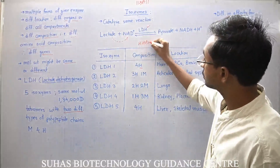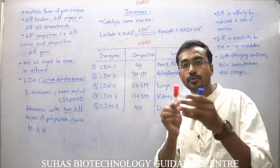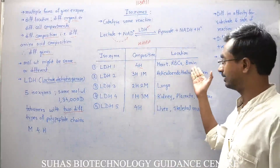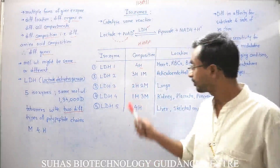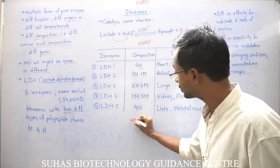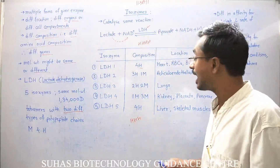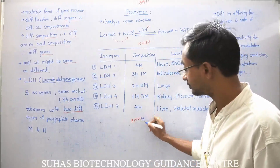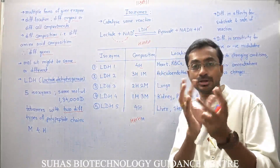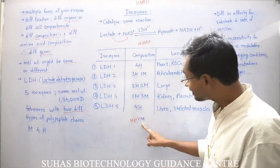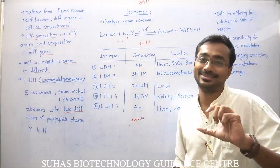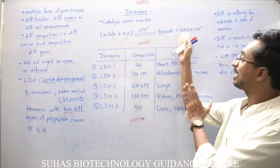LDH1 with combination H-H-H-H is present in heart, erythrocytes, and brain. LDH2 has composition 3H and 1M — three H-type polypeptides and one M-type — and these 4 polypeptides form a tetramer. Both 3H1M and 4H have the same active site, so lactate and NAD+ are converted into pyruvate and NADH — the reaction is the same.